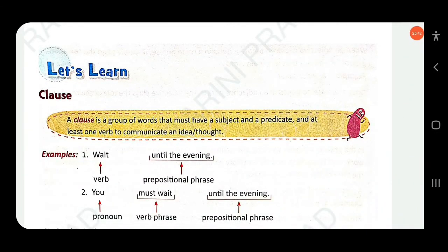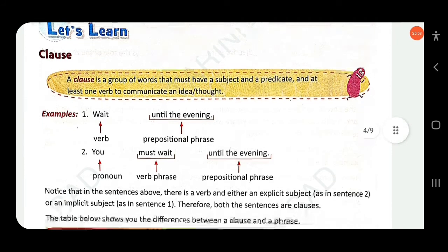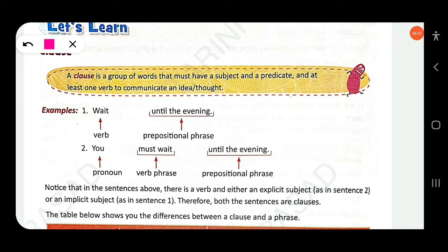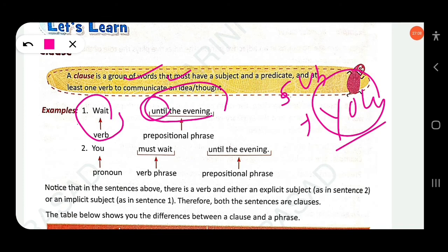Now let's learn about clauses. A clause is a group of words that must have a subject and a predicate, and at least one verb to communicate an idea or thought. For example, 'Wait until the evening' — 'wait' is the main verb. In an imperative sentence, the subject is hidden (implied 'you'). So this is a clause.